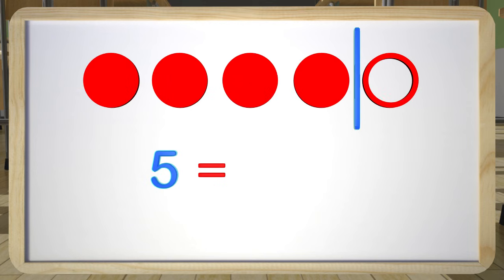Here is one more. We have the circles and the line that separates them, so what does five equal in this problem?